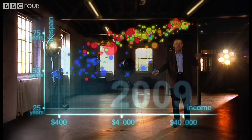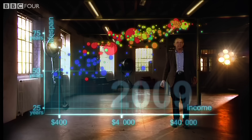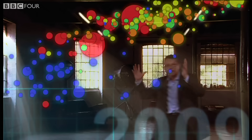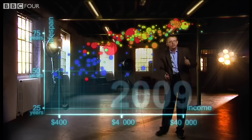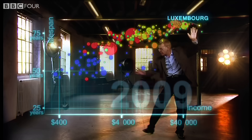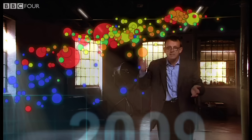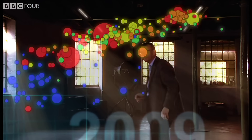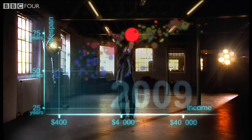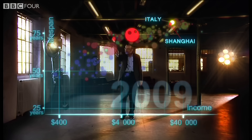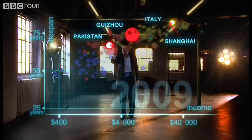And now we can see the world today in the most up-to-date statistics. Most people today live in the middle, but there are huge differences between the best and worst of countries, and also huge inequalities within countries. These bubbles show country averages, but I can split them. Take China — I can split it into provinces. There goes Shanghai: it has the same wealth and health as Italy today. And there is the poor inland province Guizhou — it is like Pakistan. And if I split it further, the rural parts are like Ghana in Africa.